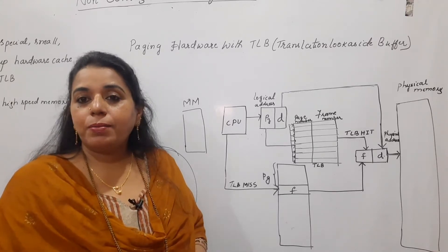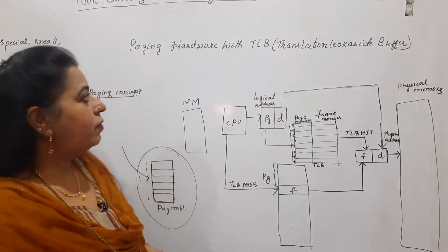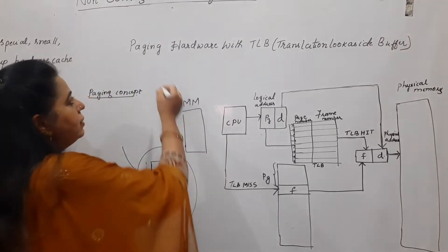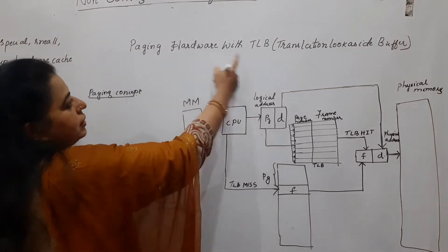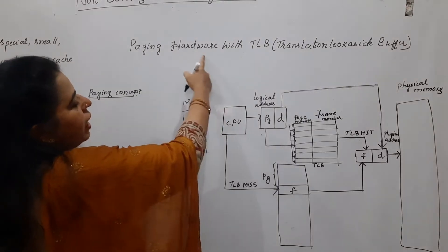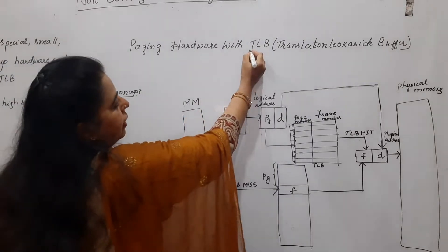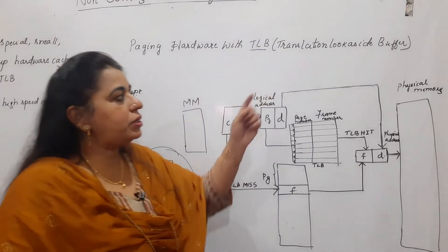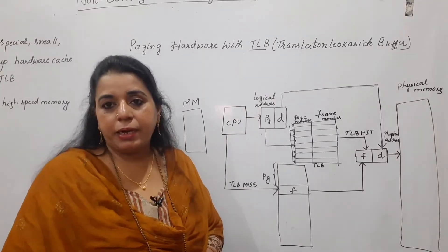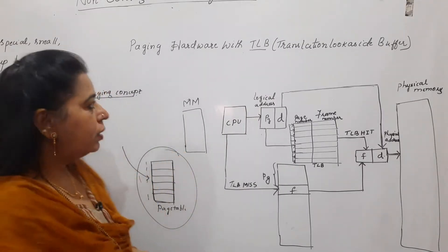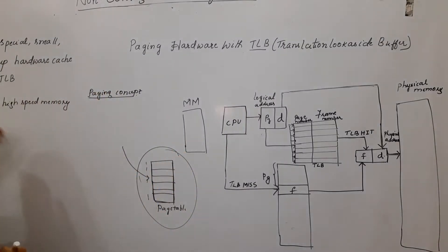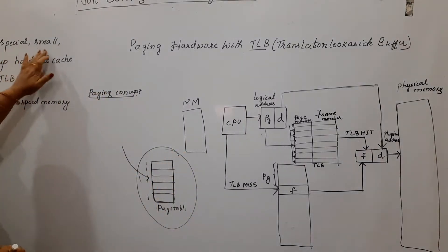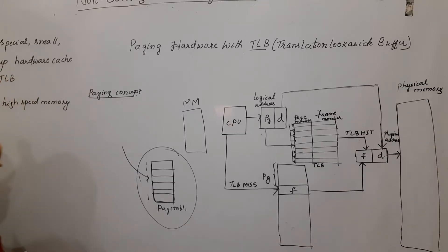In order to overcome this problem, we can use another technique called paging hardware with TLB. TLB stands for Translation Look-aside Buffer. It is a special, small, fast lookup hardware cache.